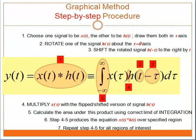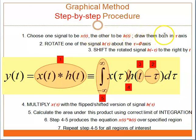The graphical method step-by-step procedure. The first step: you have to choose one signal to be Xt and the other to be Ht, and draw them both in the tau axis.